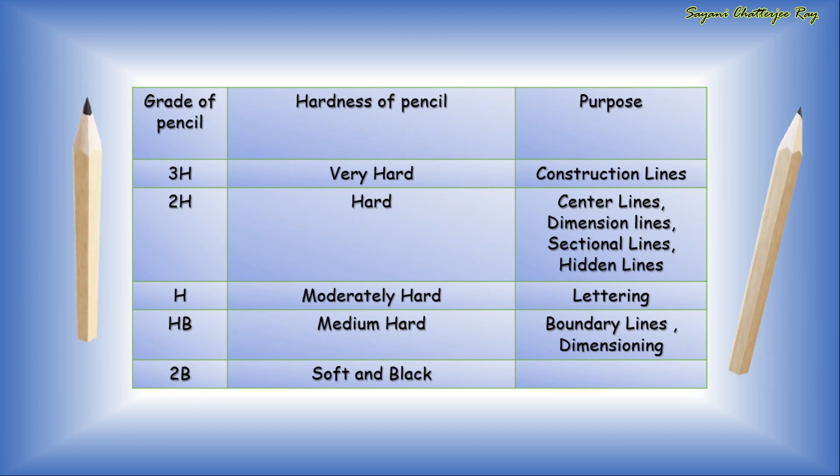The next one is H grade which is moderately hard and is used for lettering purposes. Then HB grade which is medium hard and is used for drawing boundary lines and dimensioning. And 2B grade which is soft and black.